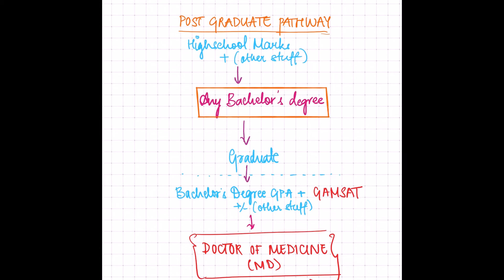Let's tackle the postgraduate pathway first. The postgraduate pathway is also known as the graduate entry pathway, postgrad coursework, or postgrad med school — they all mean the same thing. The key characteristic of this pathway is that you do not apply as a high school leaver; you apply after completing a bachelor's degree. The typical workflow is that you use your high school marks to get into any bachelor's degree, complete that degree and graduate, and then start the admissions process fresh — this is where you write the GAMSAT or the MCAT.